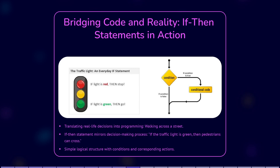For instance, in the context of pedestrians and traffic lights, the statement might be: if the traffic light is green, then pedestrians can cross the street. This simple rule captures a logical sequence — if a specific condition is met (the light is green), then a particular action should be taken (pedestrians can cross).